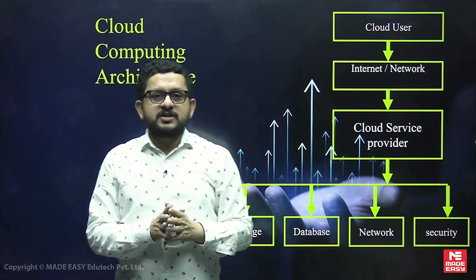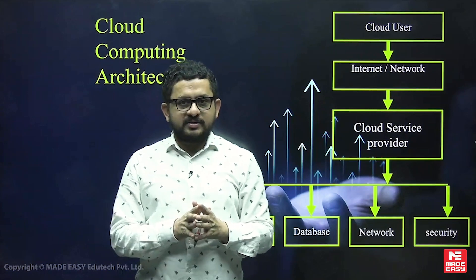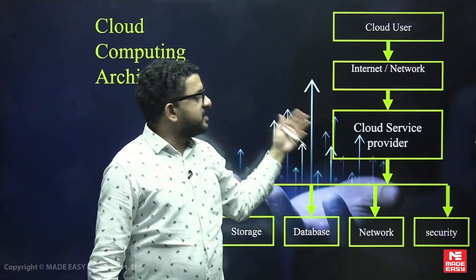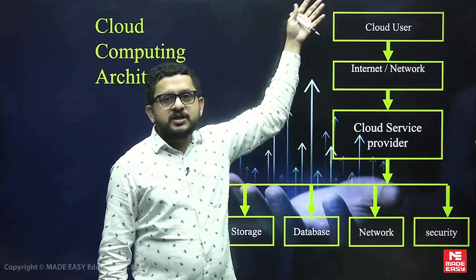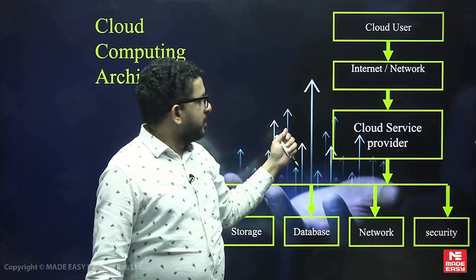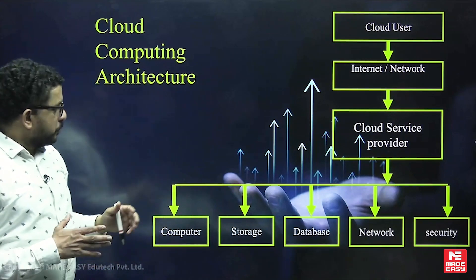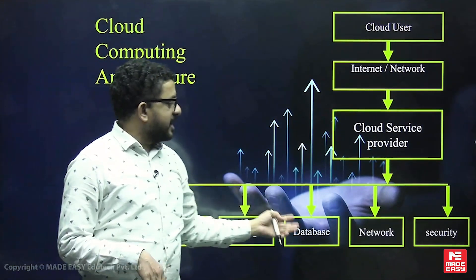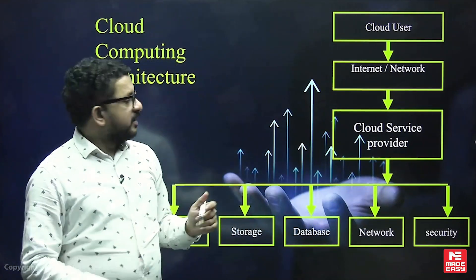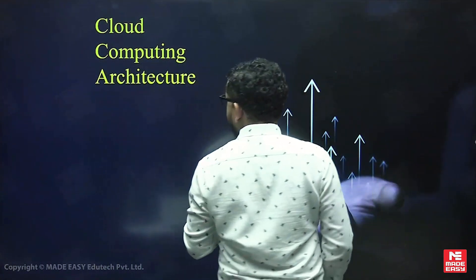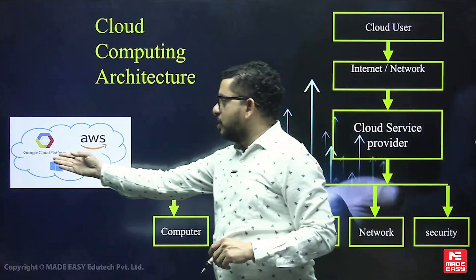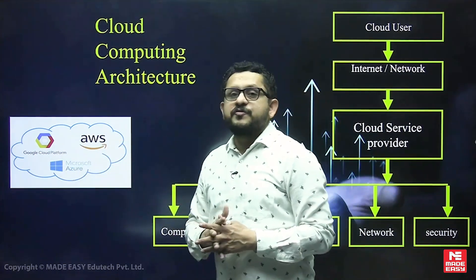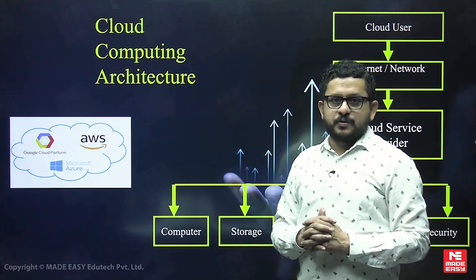Cloud users use cloud services via the internet. The internet acts as the interface between cloud users and service providers. Cloud service providers maintain the infrastructure of servers, storage, database, network, and security. There are various cloud service providers — the three major ones are Google Cloud Platform, AWS (Amazon Web Services), and Microsoft Azure.